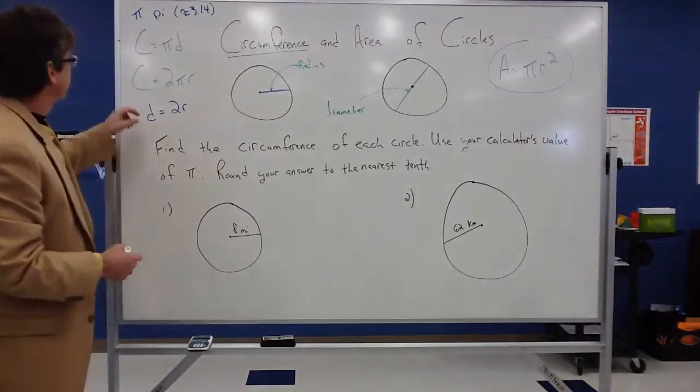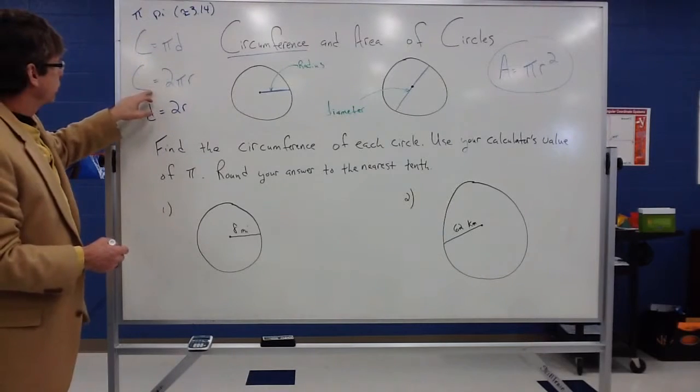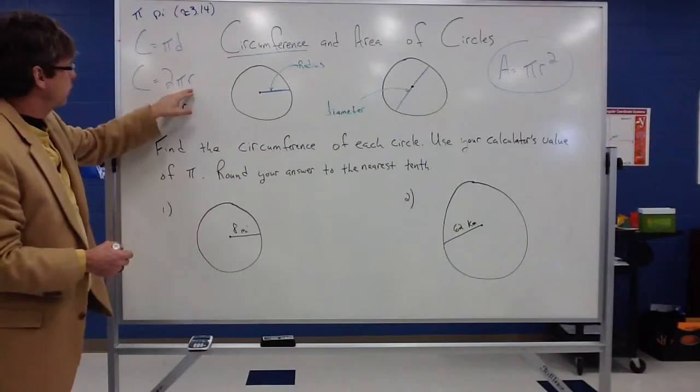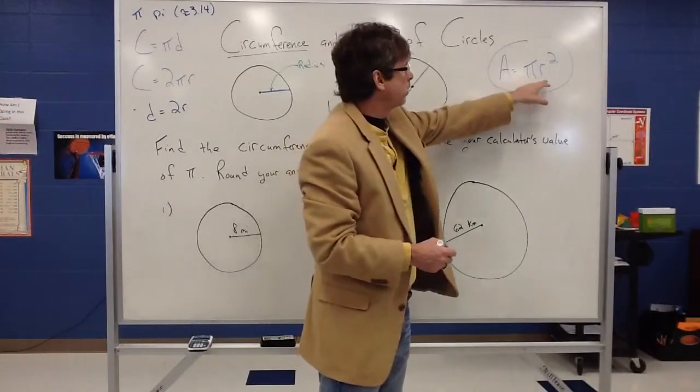We also had some formulas that said the circumference is equal to pi times the diameter, or circumference is equal to 2 times pi times the radius. We also had a formula for area. Area of a circle was pi r squared.